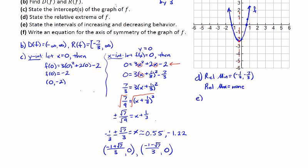For part E, we're looking at the increasing-decreasing behavior. To the left of the vertex, we are decreasing. So we're decreasing from negative infinity to negative 1/3. And we are increasing to the right of the vertex, so that will be from negative 1/3 to infinity.